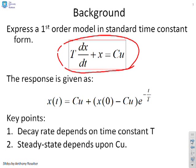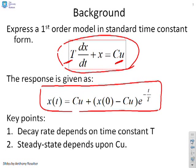This tutorial looks at things like the time constant and the gain. Assuming u is some form of constant, the response for this type of model can be given by a standard expression. The most important observations are: the decay rate depends on the time constant T, and the steady state depends upon cu — the system gain times the steady value of the input.